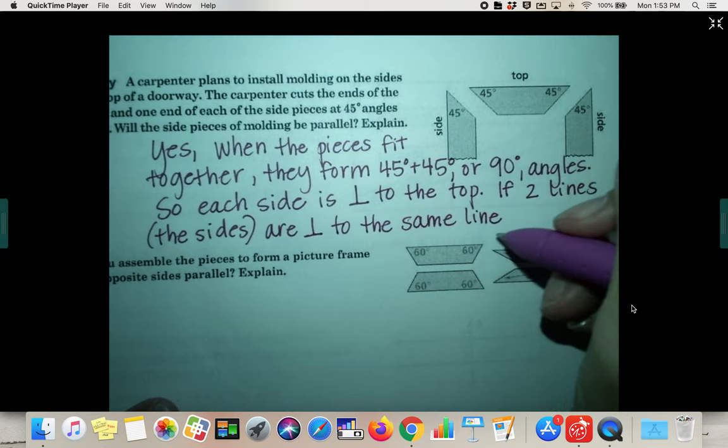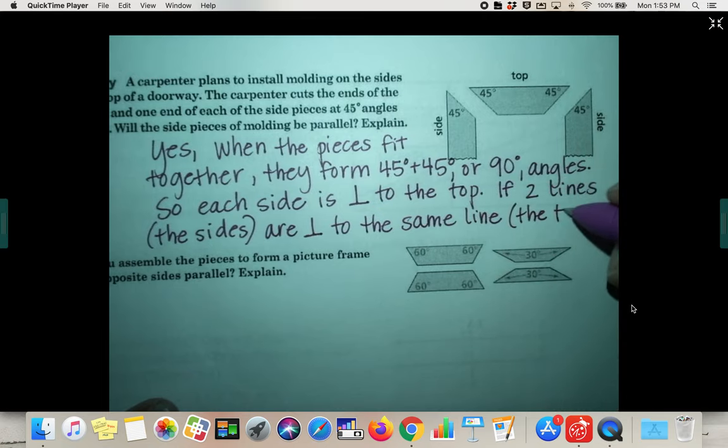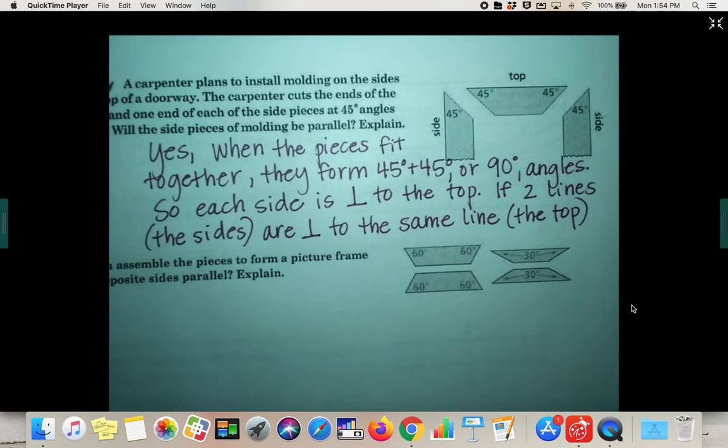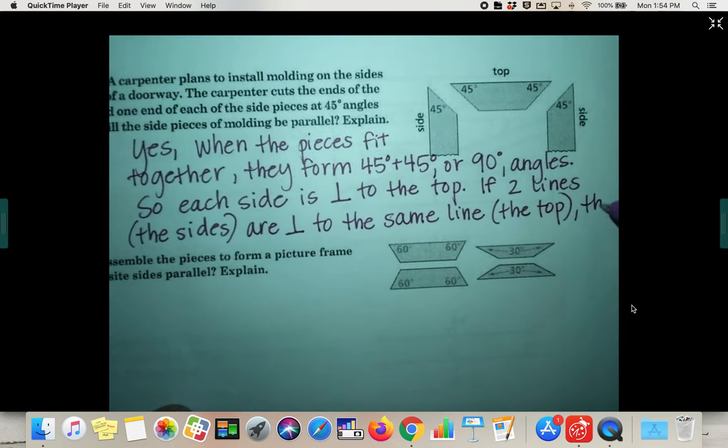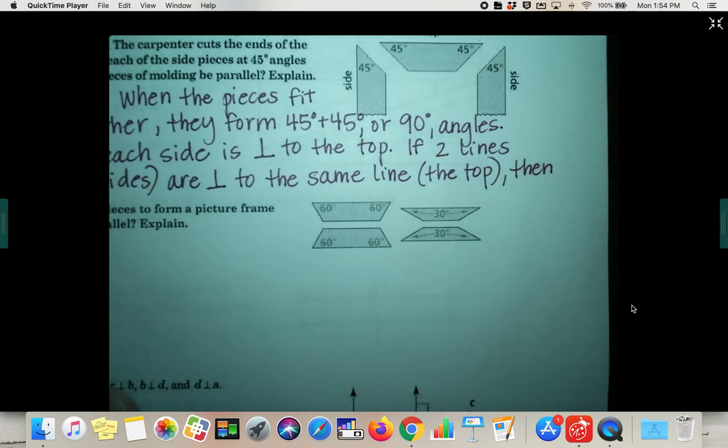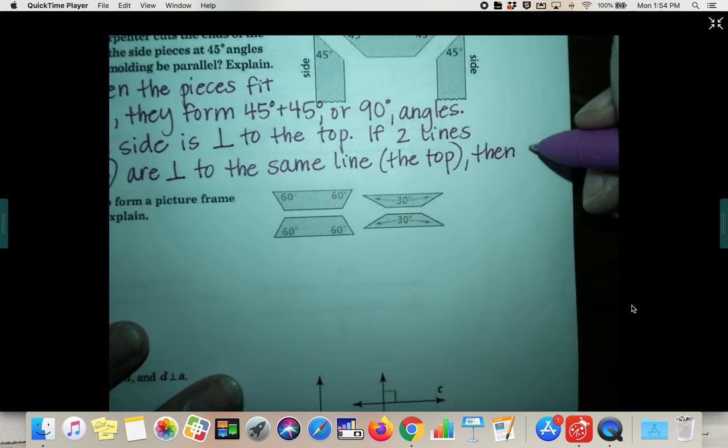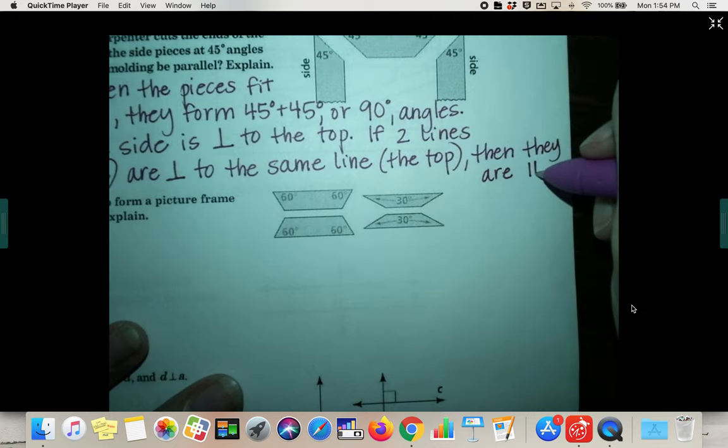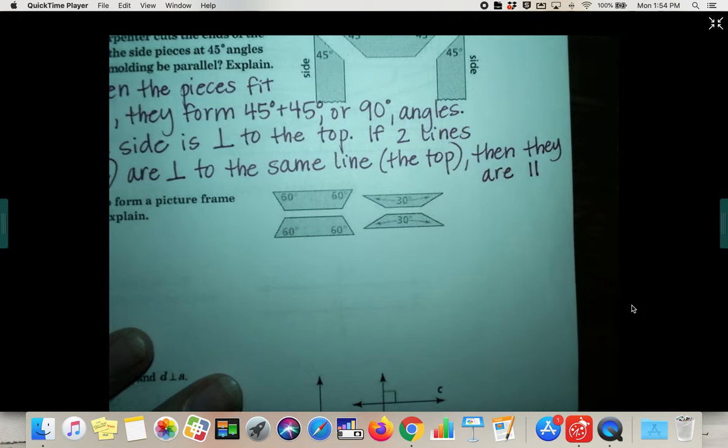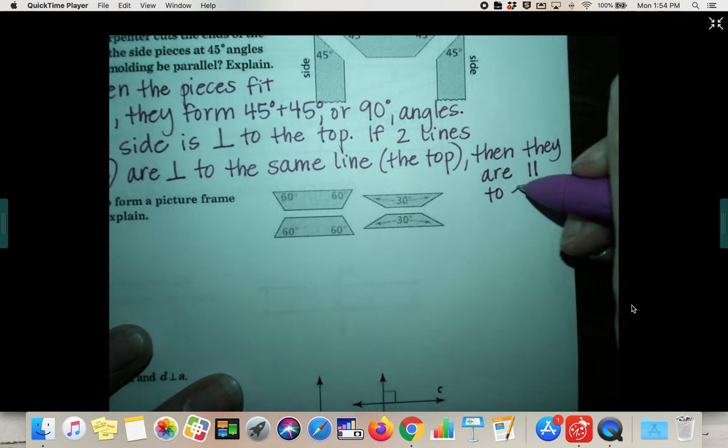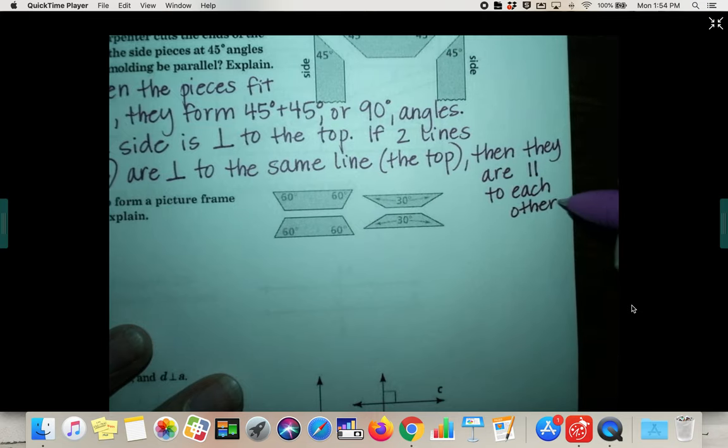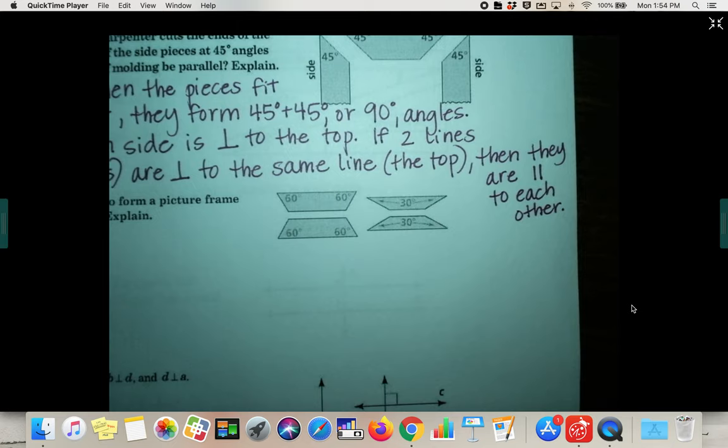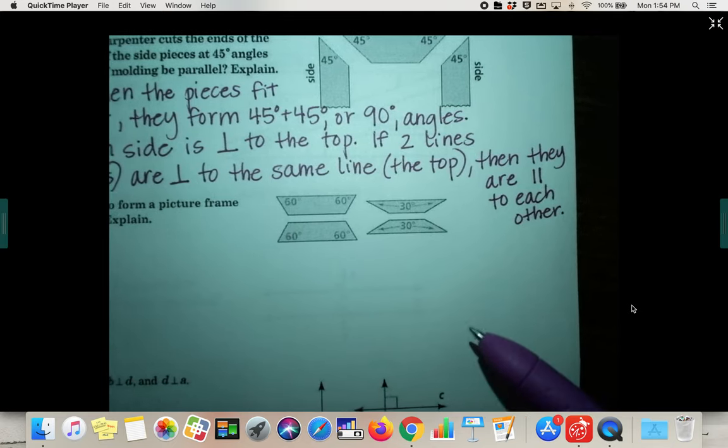which obviously that same line I'm talking about would be the top, then they are parallel. I'm going to do the two double lines for parallel to each other. Again, a little wordy, but I hope it makes sense based on our theorems that we just learned today.